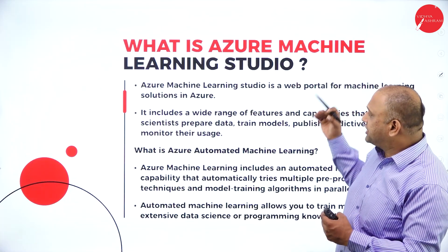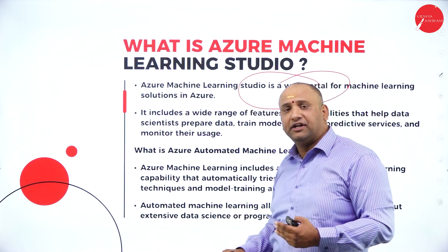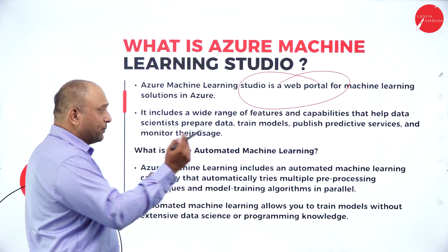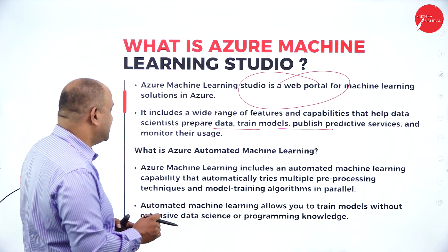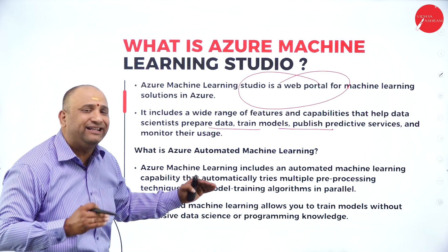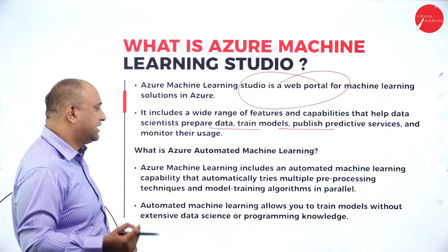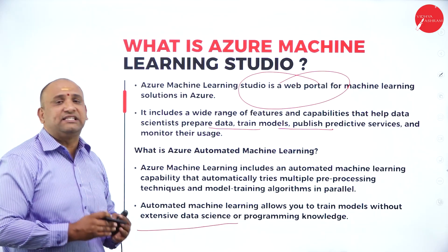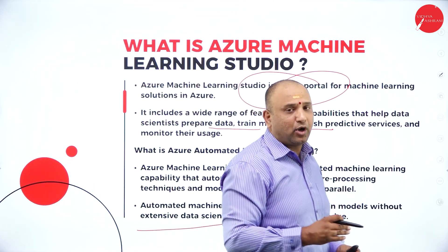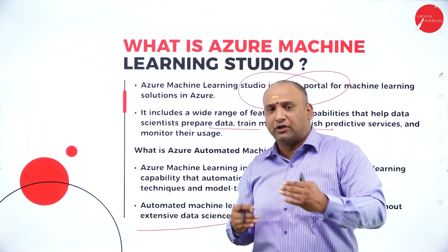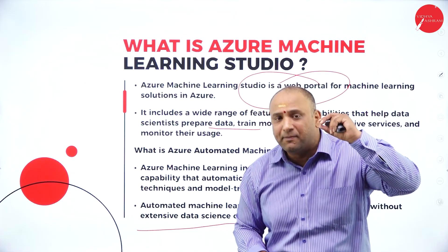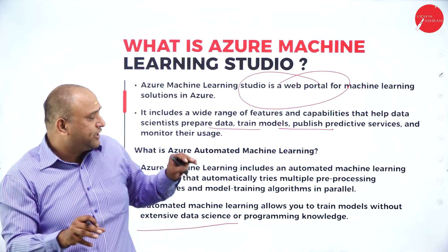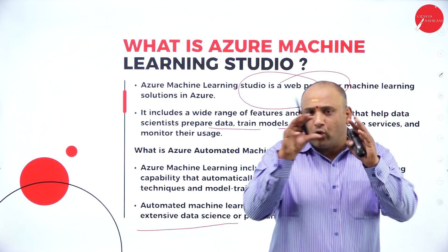Azure Machine Learning Studio is a web portal for machine learning solutions. Azure is software brought in by Microsoft with a wide range of features and capabilities that help scientists prepare data, train models, and publish predictive services. The automated learning part automatically tries multiple preprocessing techniques and uses all model algorithms in parallel. The goal is to train models without extensive data science and programming knowledge — using minimum data to get maximum prediction, with parameters controlling the prediction levels.